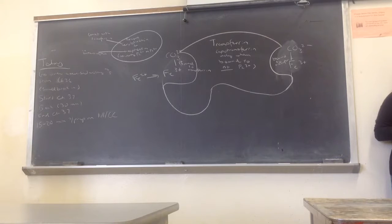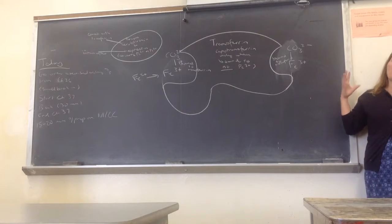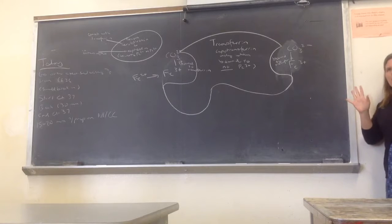Transferrin binds to iron in the 3+ state. It requires an enzyme to convert iron from 2+ to 3+ to allow binding. Because we take in iron in the 2+ state, we'll get to that.